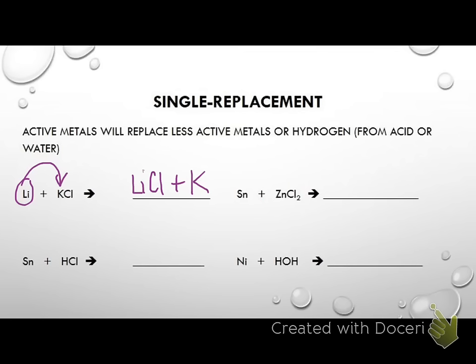In the case of the second example, we need to know will tin replace hydrogen. We go look at our activity series and find Sn — it's right between nickel and lead. So tin is above hydrogen, so it will replace it.